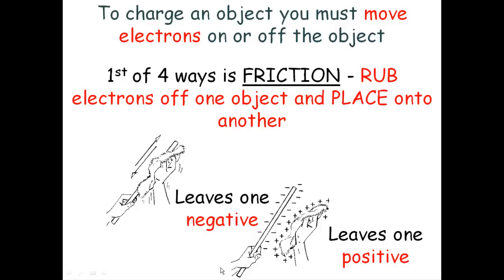Now that we have that straight, let's talk about the four ways to charge an object. First way is friction. You've done this all the time. You've rubbed your feet across the floor. You physically have used friction to take electrons off one object to another, leaving one object negative and one object positive. You've taken electrons off of something.